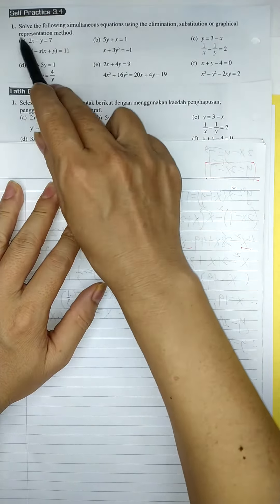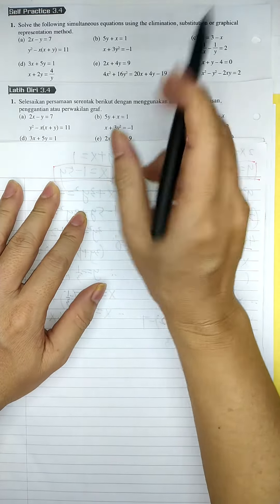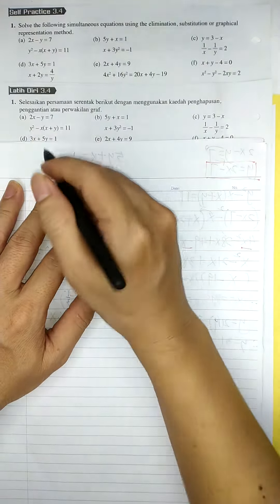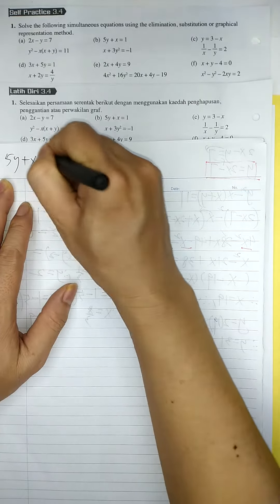Question 3.4, Question 1b. 5y plus x equal to 1, and the second equation. So we choose 5y plus x equal to 1.